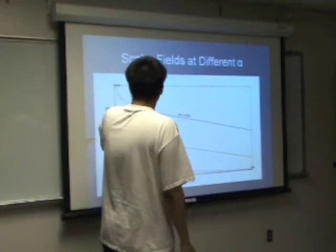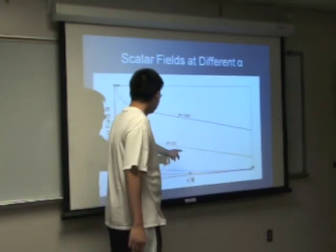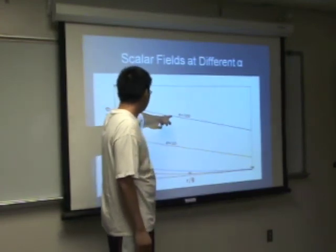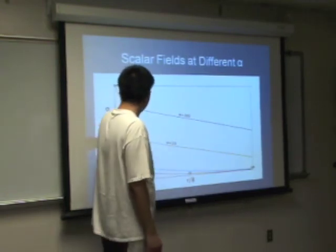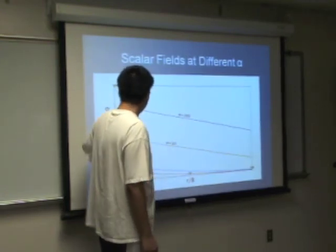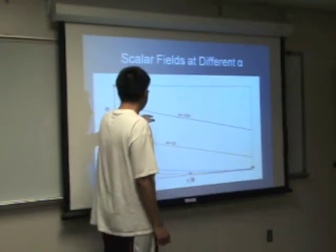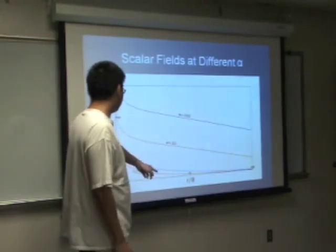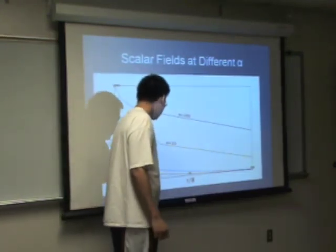And here's the scalar field at different alpha. You can see that for big alphas, alpha equals 100, there's a huge change versus the phi. So there's a huge relation between the phi and alpha.